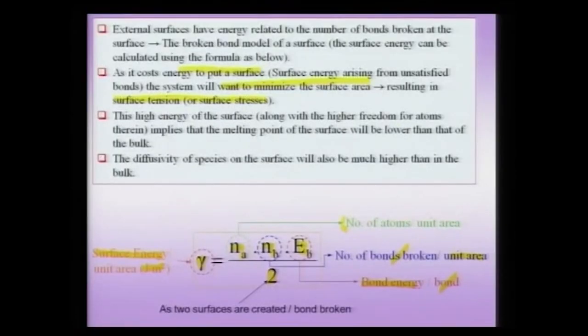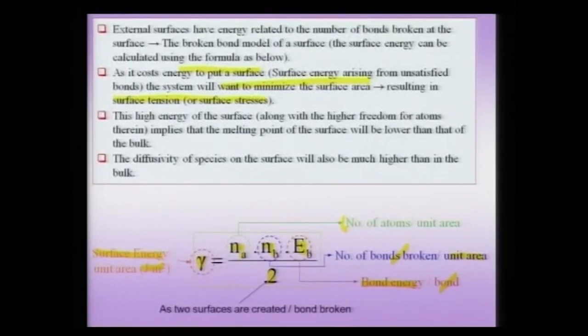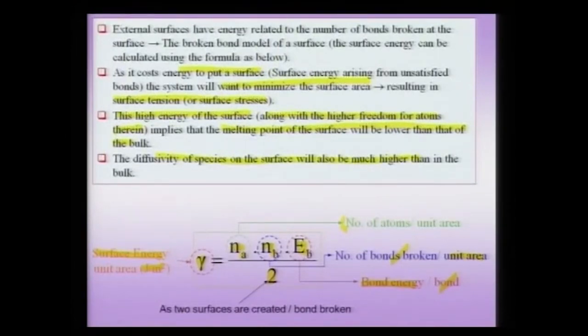We will make a calculation showing how this formula can be used, but we have to remember this is called the broken bond model. In other words, I do not incorporate any other effects like surface relaxation after the cut is made or any kind of reconstruction effects — this is the simplest kind of formula. Another important effect of surface energy: given that the surface is in a state of high energy and atoms at the surface have higher freedom compared to the bulk, the melting point of the surface will be lower than that of the bulk. Additionally, diffusivity of species at the surface will also be much higher compared to the bulk.